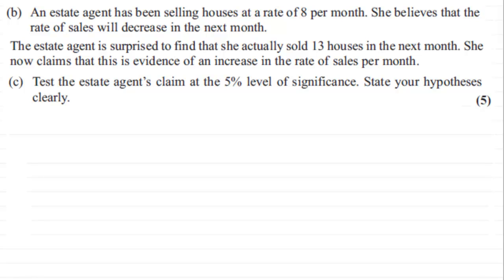What we have here is an estate agent who has been selling houses at a rate of 8 per month. She believes that the rate of sales will decrease in the next month. The estate agent is surprised to find that she actually sold 13 houses in the next month, and she now claims that this is evidence of an increase in the rate of sales per month. We need to test the estate agent's claim at the 5% level of significance and state the hypotheses clearly.